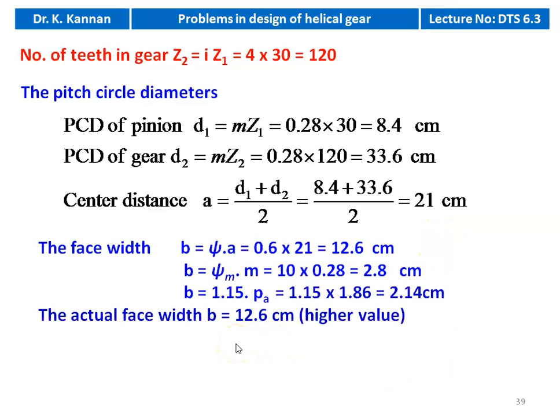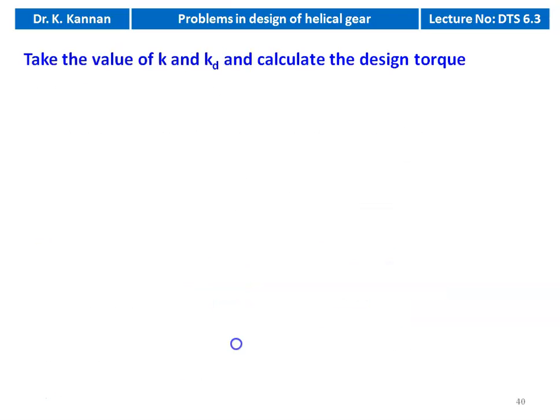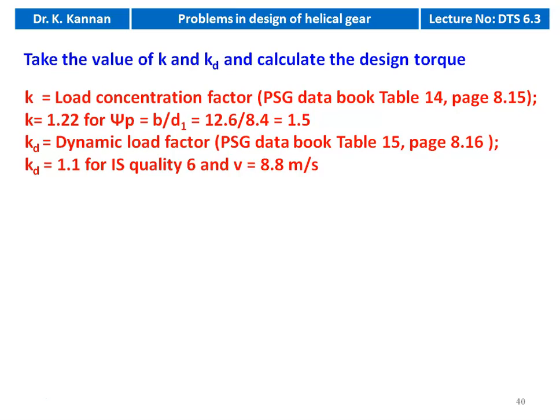Face width — three equations: B = ψ × A = 0.6 × 21 = 12.6 cm; B = ψm × m = 10 × 0.28 = 2.8 cm; B = 1.15 × Pi = 1.15 × 1.86 = 2.14 cm. We fix B = 12.6 cm (the highest value). Pitch line velocity: V = π × D1 × N / 60 = π × 0.084 × 2000 / 60 = 8.8 m/s. Load concentration factor K = 1.12 for B/D1 = 12.6/8.4 = 1.5 from page 8.14. Dynamic load factor KD = 1.1 for IS quality 6 and V = 8.8 m/s from table 15.